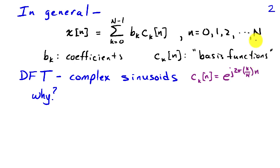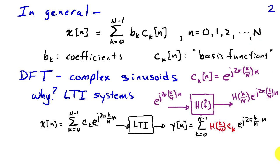Now why are complex sinusoids useful? The biggest reason is because of how they interact with linear time invariant systems. If we put a complex sinusoid with frequency k over n into a linear time invariant system having frequency response h of f hat, then the output of that system will be h of k over n times the input complex sinusoid. So the action of the system is to multiply the input complex sinusoid by the frequency response of the system at that frequency.